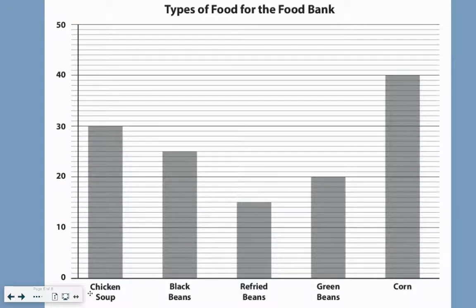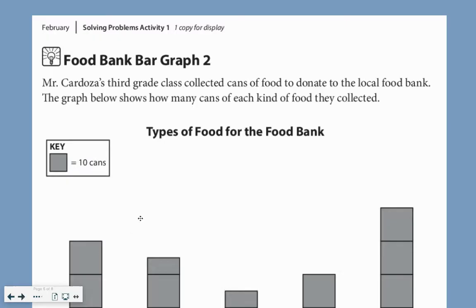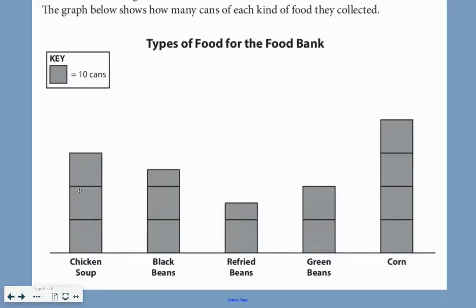But we can compare. Here's chicken soup — there were 30 cans of chicken soup on the bar graph. And on this graph, there's a box worth 10 cans, so 10, 20, 30 — there are 30 cans of chicken soup here too. So they're showing me the same thing. They just look a little bit different.